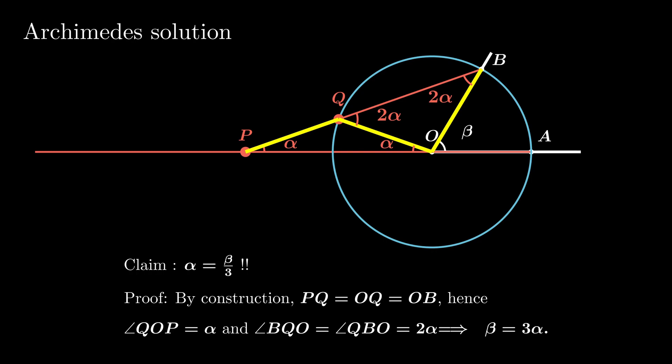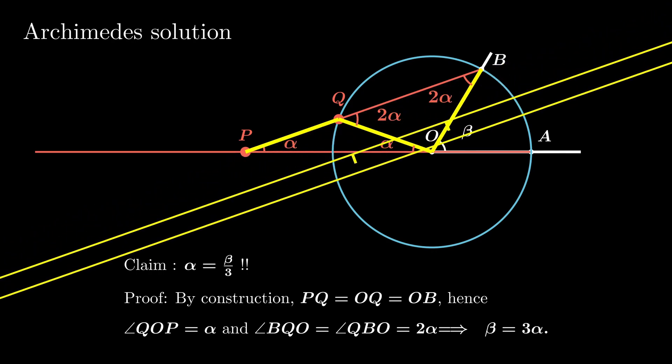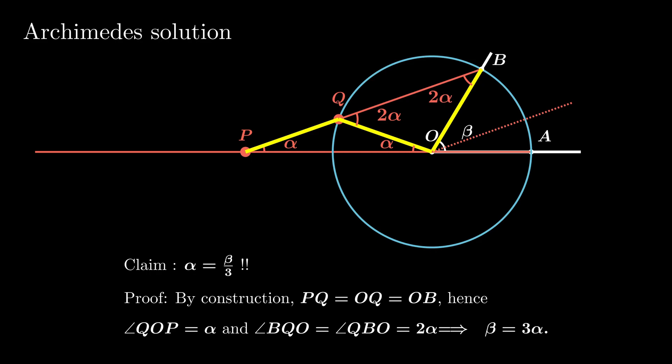So finally, we only need to draw the parallel line through O in order to trisect the original angle. Voila, that's it. Quite simple, right?